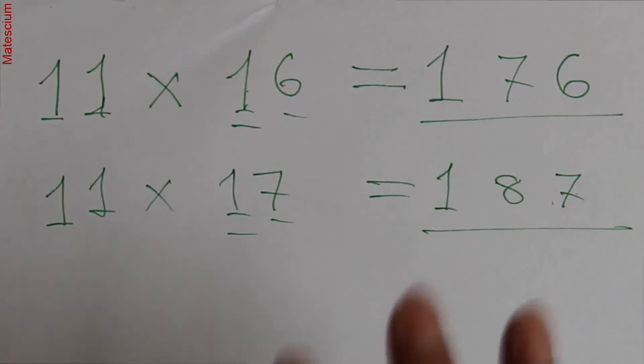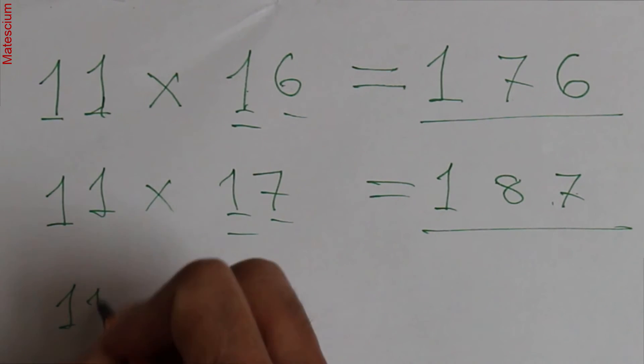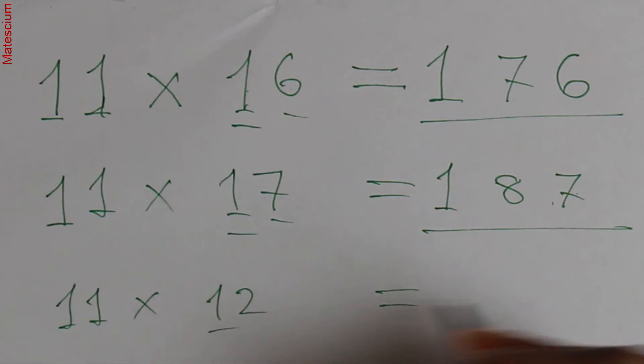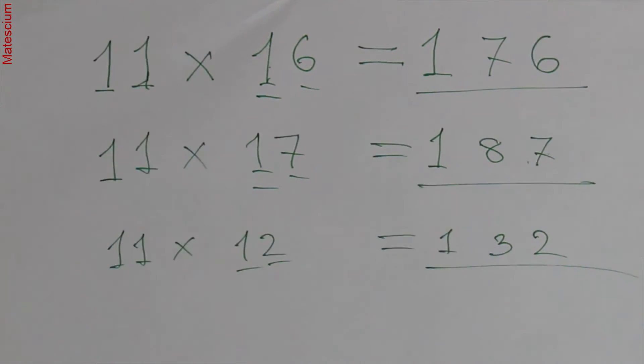You can calculate it by using your calculator and check whether it is correct or not. Let's say 11 times 12. Apply the same rules. Write 1 here, write 2 here, and 2 plus 1 is 3. Yes, 132 is the answer.